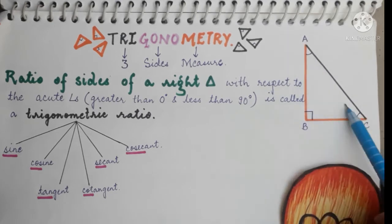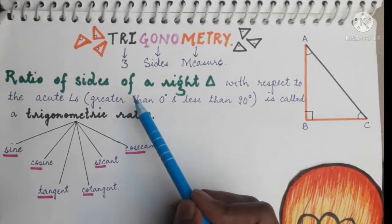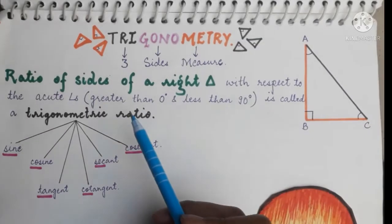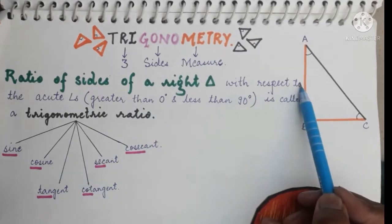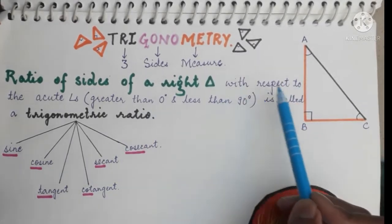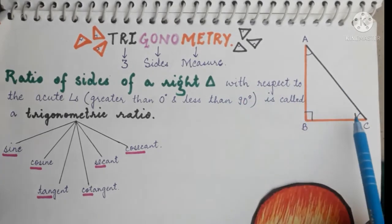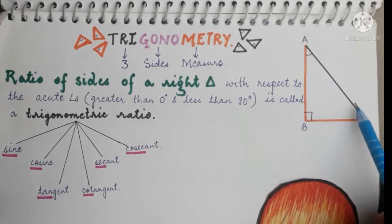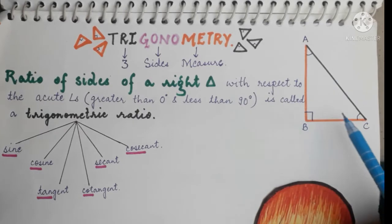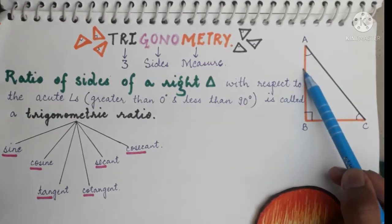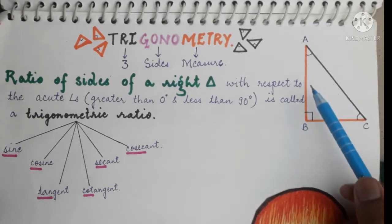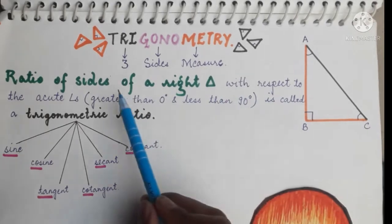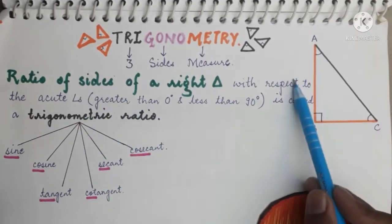Now, look at this figure. This is a right triangle at B. It has two acute angles: angle A and angle C. Acute angles are greater than zero degrees and less than 90 degrees. So the trigonometric ratio is the ratio of the sides of a right triangle with respect to the acute angles. The ratios include AB upon AC, BC upon AC, AB upon BC, etc.